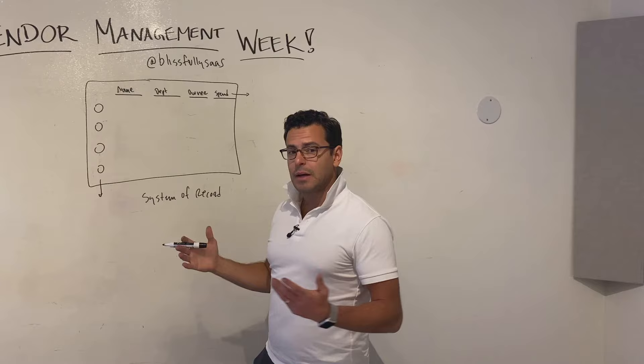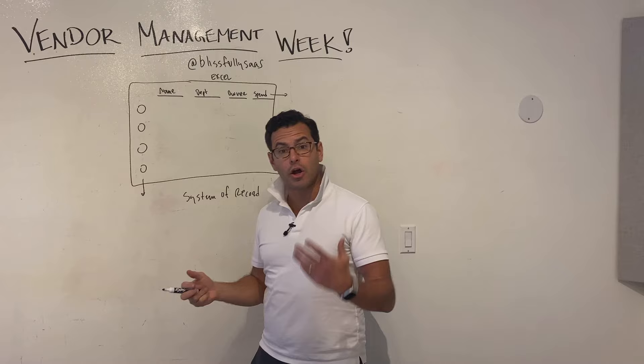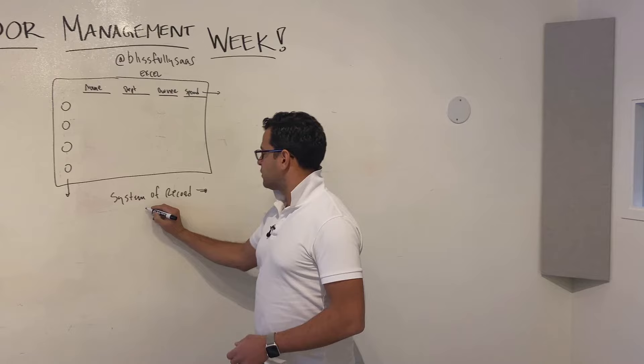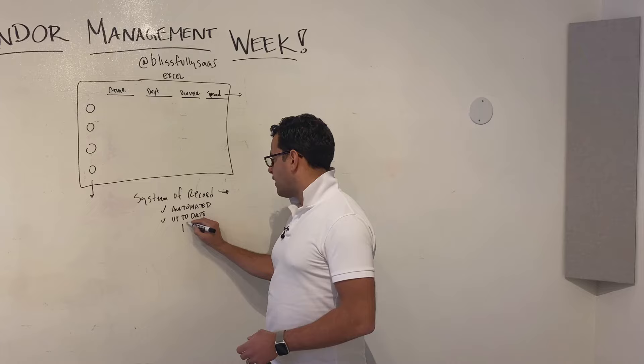This comprehensive set of vendor information and important metadata is often managed in Excel. That's a great place to start because you're getting a sense of all this data, but it's hard to maintain in Excel because it's not automated and it's not integrated to your key business systems. The goal of a good system of record is to have it be automated and always up-to-date.